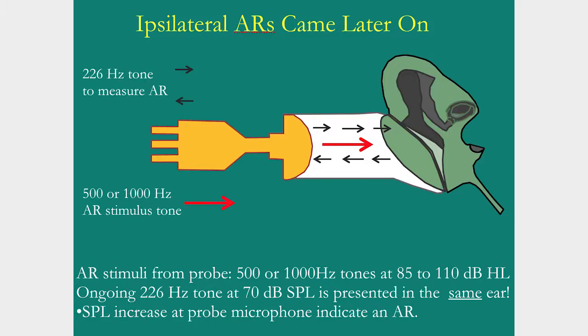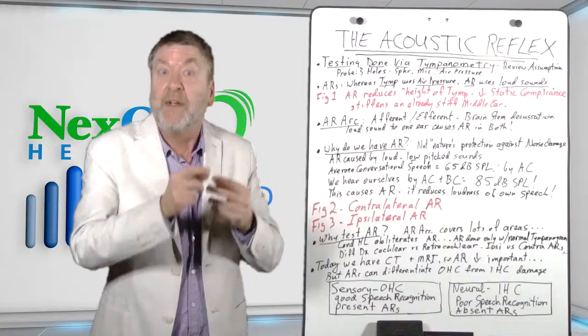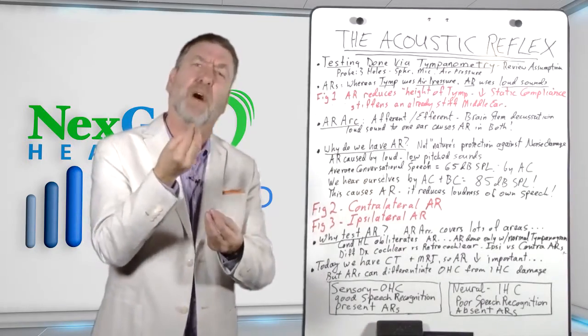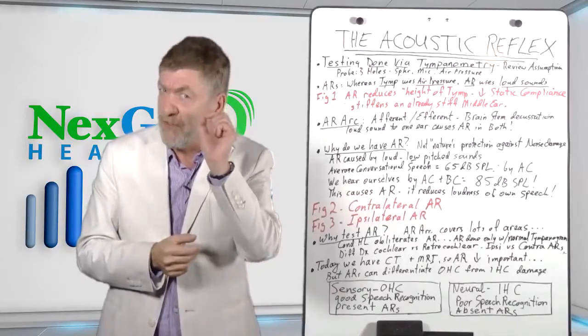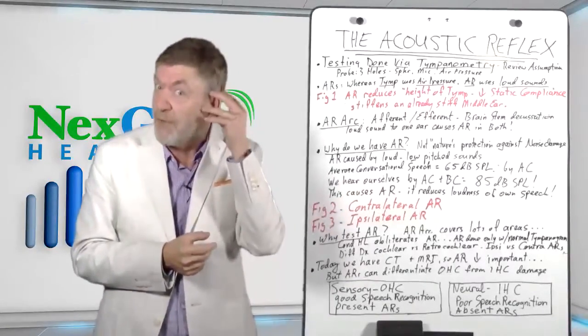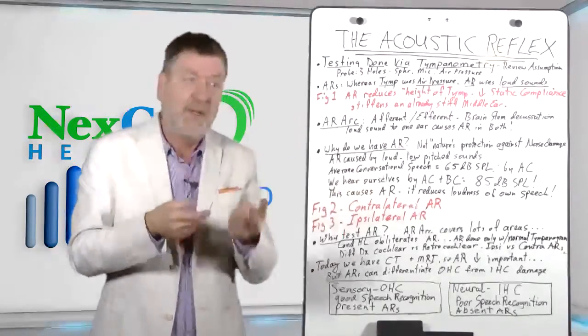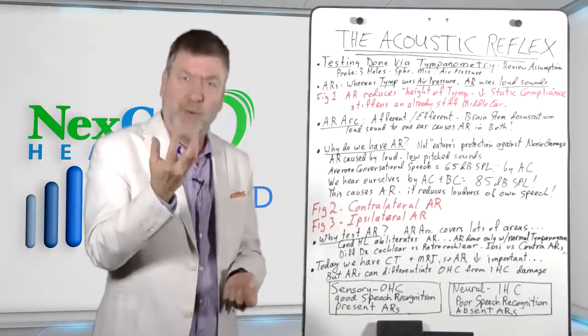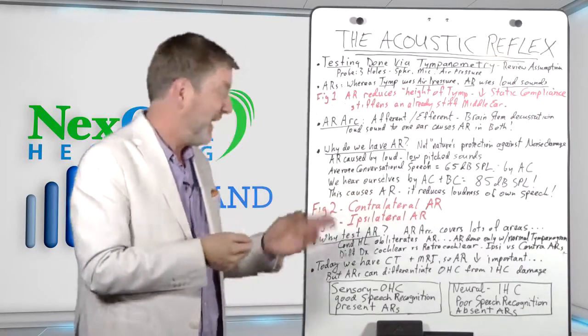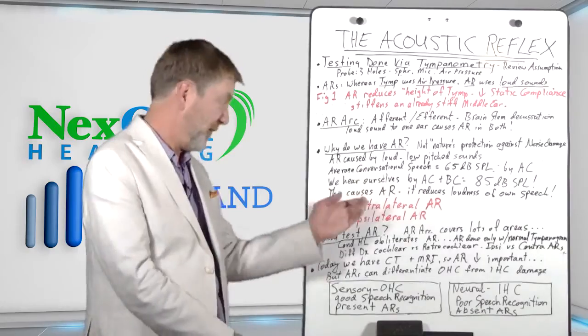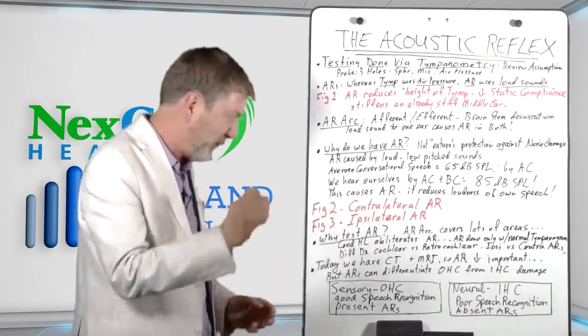Figure 3 shows the ipsilateral method. Here, the probe is put in one ear, and that's emitting the low-pitched tone that's reflected off the drum, and at the same time then, the loud, sudden, low-pitched acoustic reflex stimulus also is emitted out of that same probe. And so you can think of the complexity, think of the possible or potential interactions between that loud stimulus used to elicit the acoustic reflex and the ongoing low-frequency tone that's constantly emitted and bouncing off the drum. There's high potential of interaction between those two tones, and that goes a long way to explaining why ipsilateral acoustic reflex measurements came later than contralateral acoustic reflex measurements. At any rate, we'll return to that in just a bit.